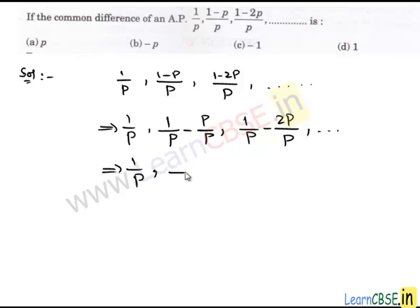It is 1 upon P, 1 upon P minus 1, since P and P get cancelled, and then we have 1 upon P minus 2.